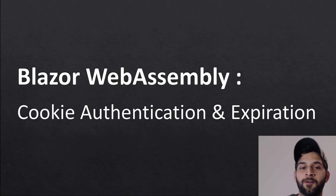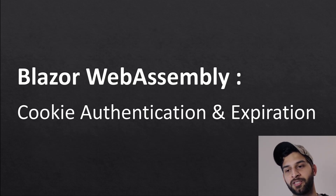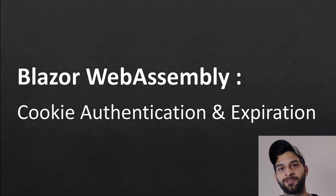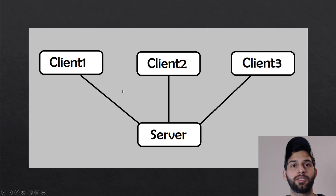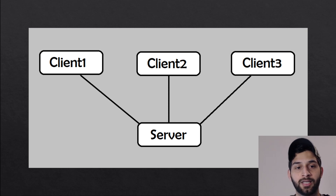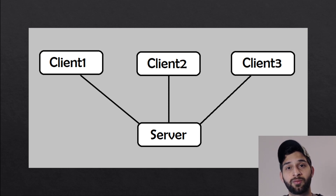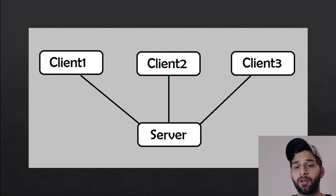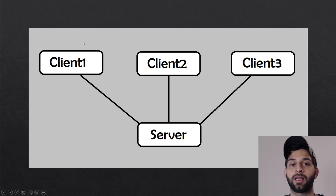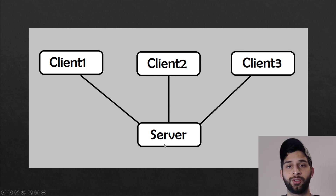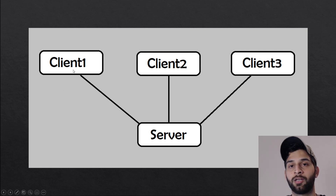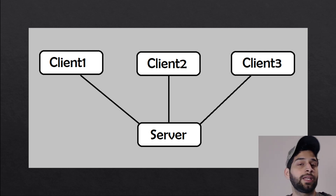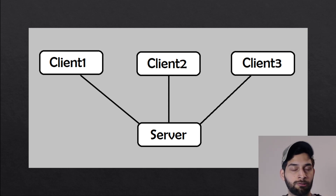Hello everyone. In this episode I'm going to talk about cookie authentication and expiration for Blazor WebAssembly applications. When we created our Blazing Chat application, we created it as the .NET hosted version of Blazor WebAssembly application, which created a server project and a client project for us. We used the server project to issue a cookie and store it on the client browser to indicate whether the user is logged in or not.